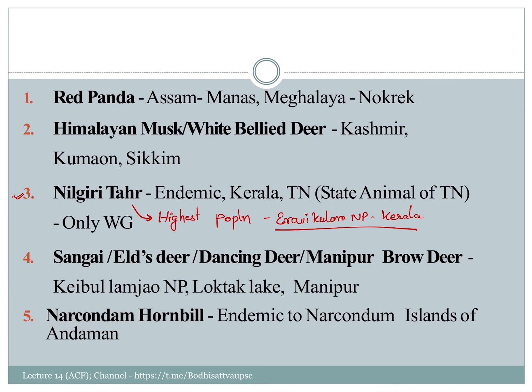The Narcondam hornbill is found on the Narcondam island — an island species.